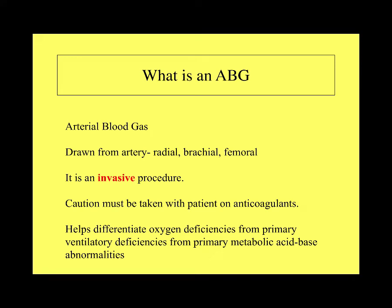In a patient not on bypass, a blood gas is drawn from the artery. In critical care medicine, an arterial line measuring arterial pressure provides great access for an arterial blood gas, or ABG. It is an invasive procedure, and caution must be taken with patients on anticoagulants. These blood gases help differentiate oxygen deficiencies from primary ventilatory and primary metabolic acid-base abnormalities. An ABG is more than just dissolved gases in plasma — it also helps us understand acid-base balance, which can stem from respiratory or metabolic conditions.